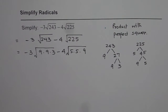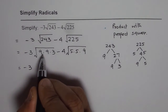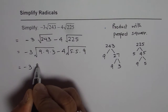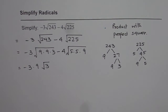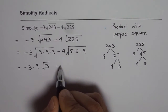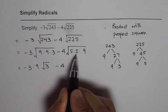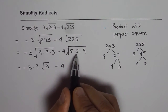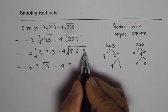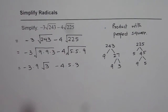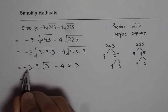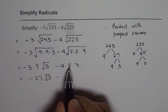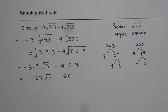Now within the square root, 9 times 9 is 81, so we can take out 9. We get minus 3 times 9 times square root of 3. On the other hand, square root of 5 times 5 is 5, and square root of 9 is 3, so from square root of 225 we get 5 times 3 equals 15. That gives us minus 27 square root of 3, and minus 4 times 15 equals minus 60 square root of 3.